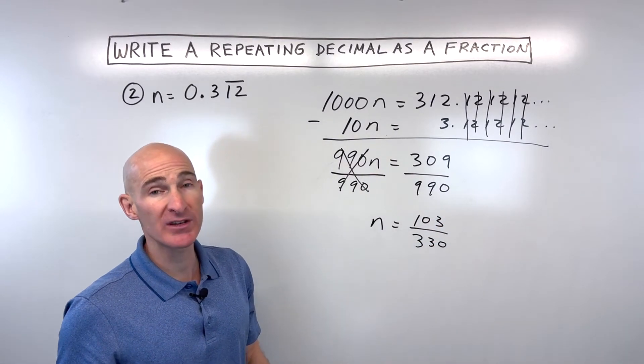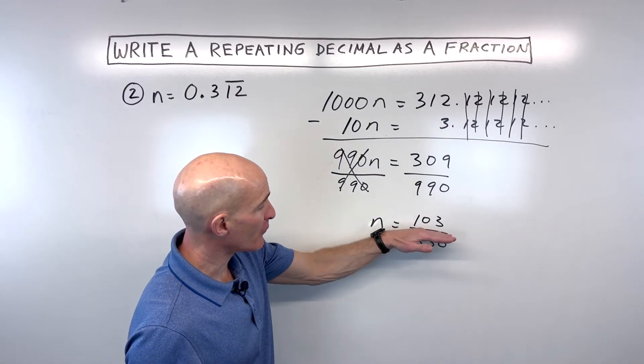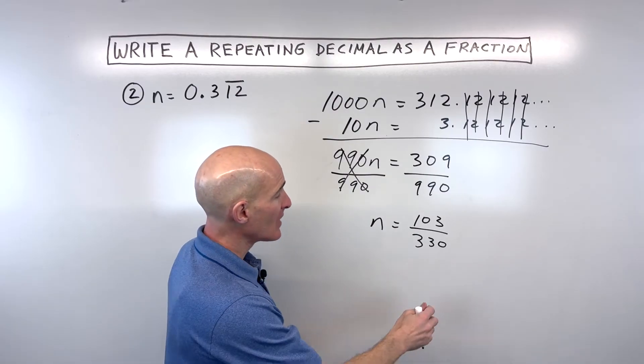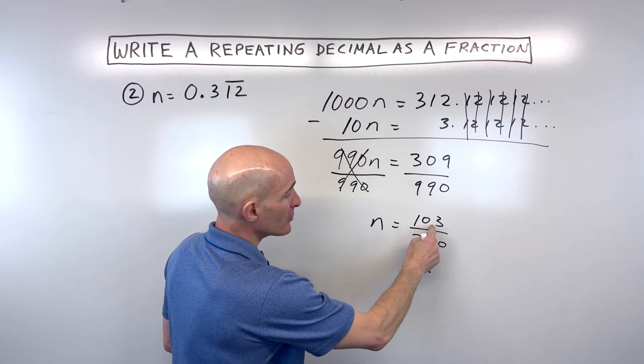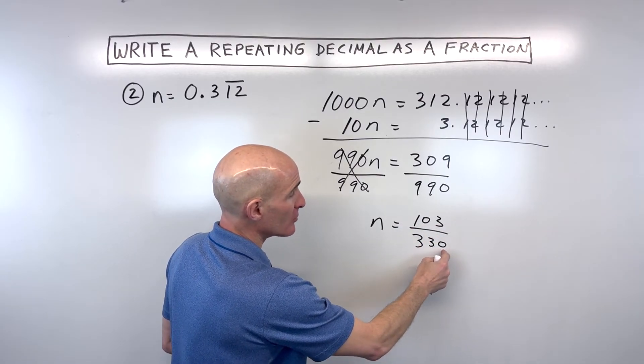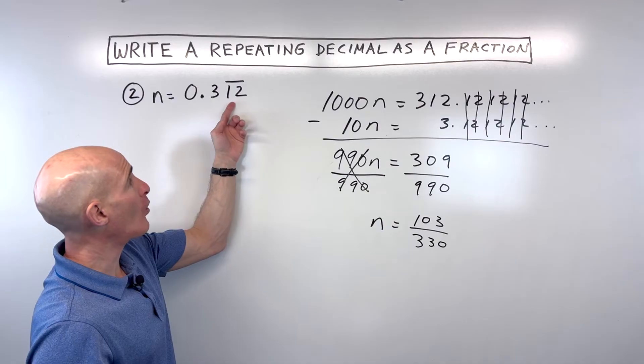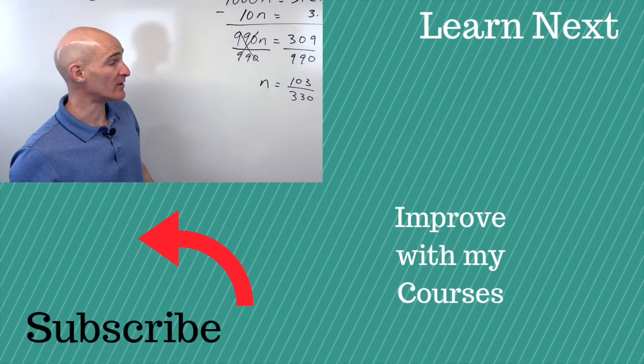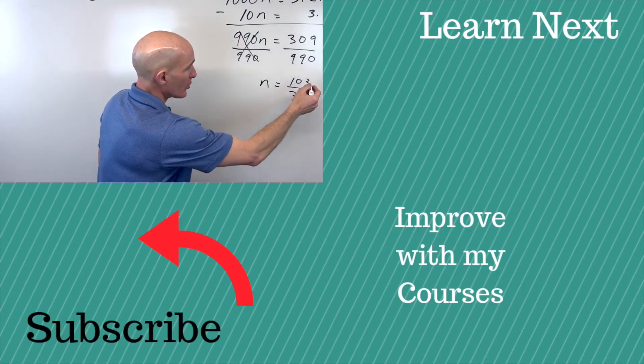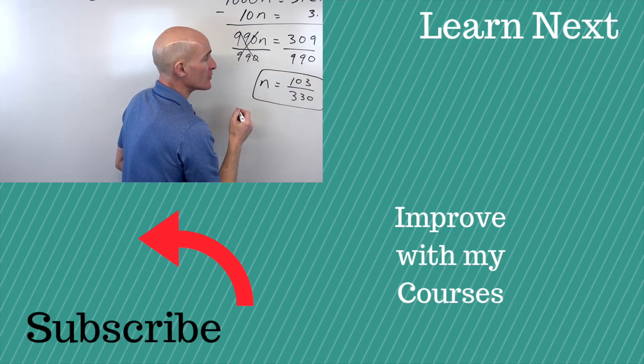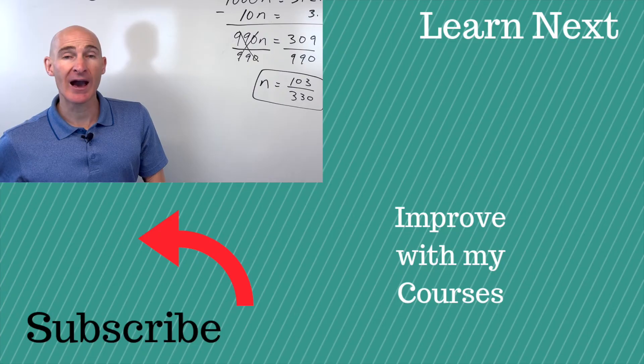Now, the nice thing about this is you can check your work. Remember, the fraction bar is like a division sign. So you could put in your calculator 103 divided by 330. And you'll get back this 0.312121212 like that. And you can check your work. Or you can divide it by hand as well. But either way, you can check and you got it.